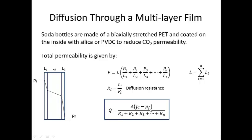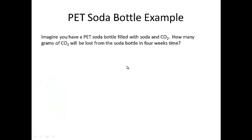I can now calculate the mass flow rate as being equal to the area times the pressure difference between the inside and outside of the polymer membrane, divided by the summation of the resistances of each layer of the membrane. So let's take an example of a PET soda bottle. PET soda bottles are filled with both soda and also CO2 for carbonation. The question is, how many grams of CO2 will be lost from the soda bottle in four weeks time?